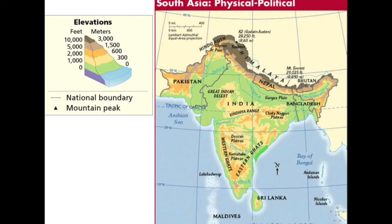The major river systems of South Asia include the Indus and the Brahmaputra. The Indus flows mainly through Pakistan, and this area was home to the Indus River Valley, known as the Cradle of Ancient Indian Civilization. The Brahmaputra flows east through the Himalaya, then west into India and Bangladesh, joining the Ganges River to form a delta before emptying into the Bay of Bengal.